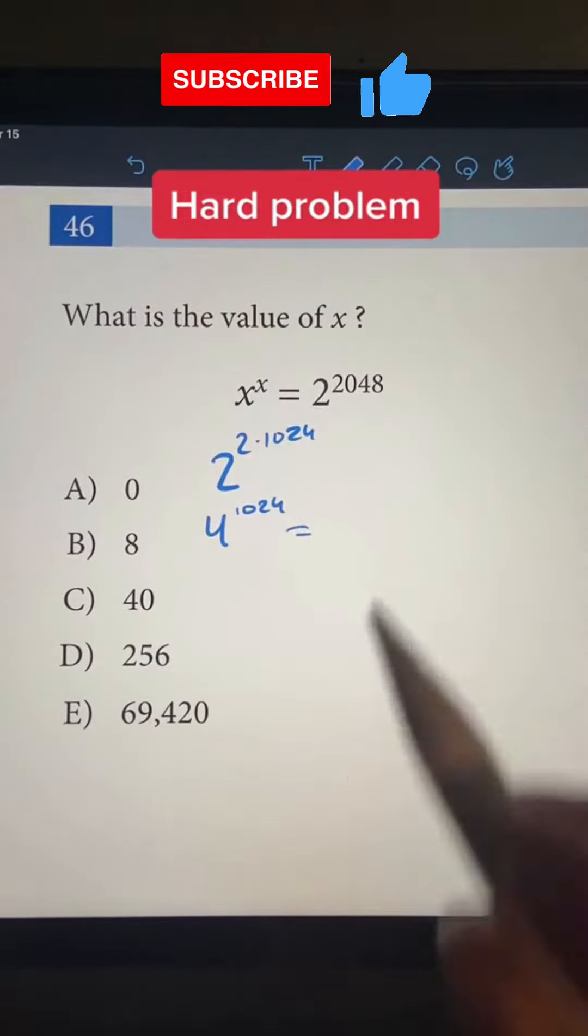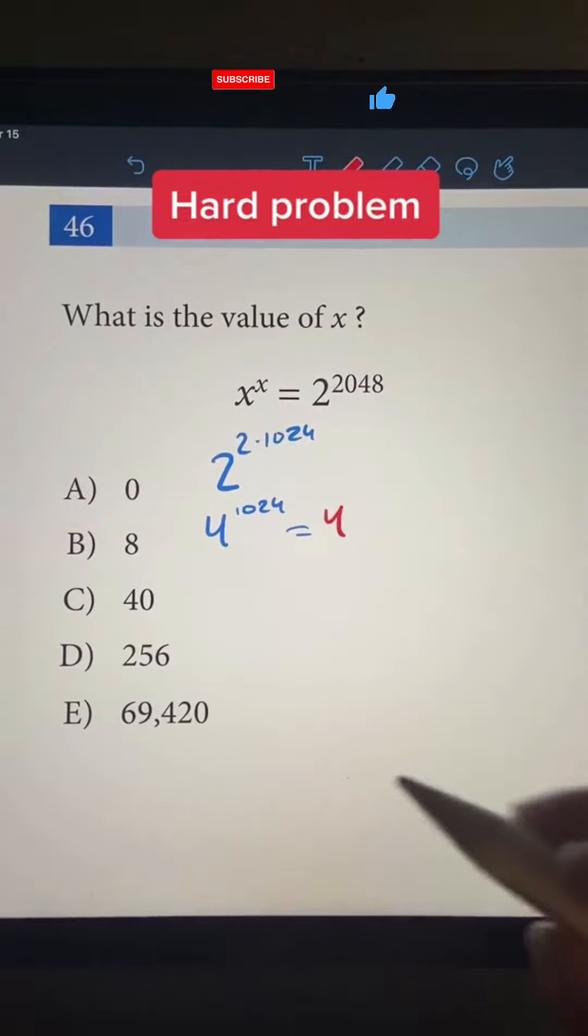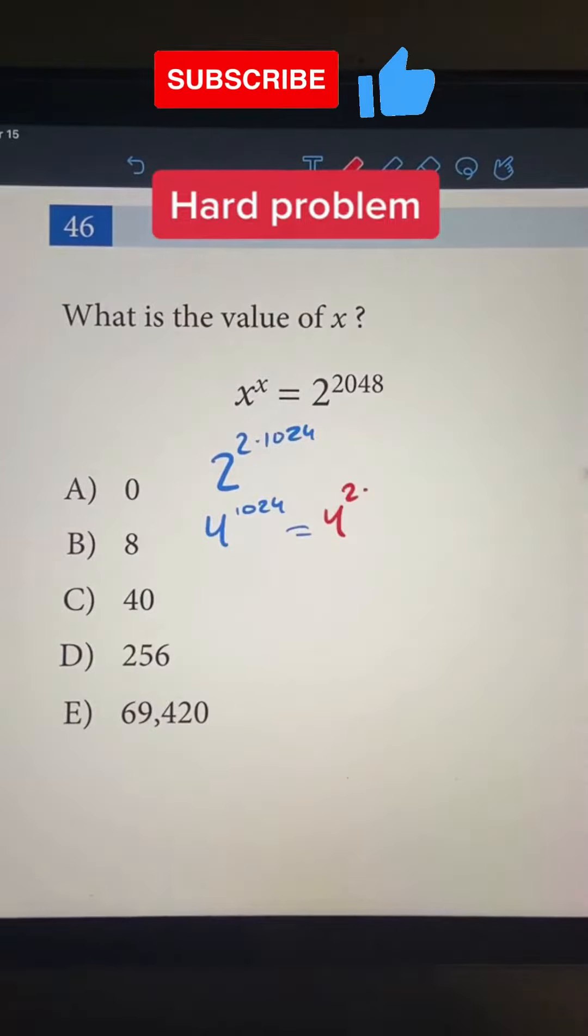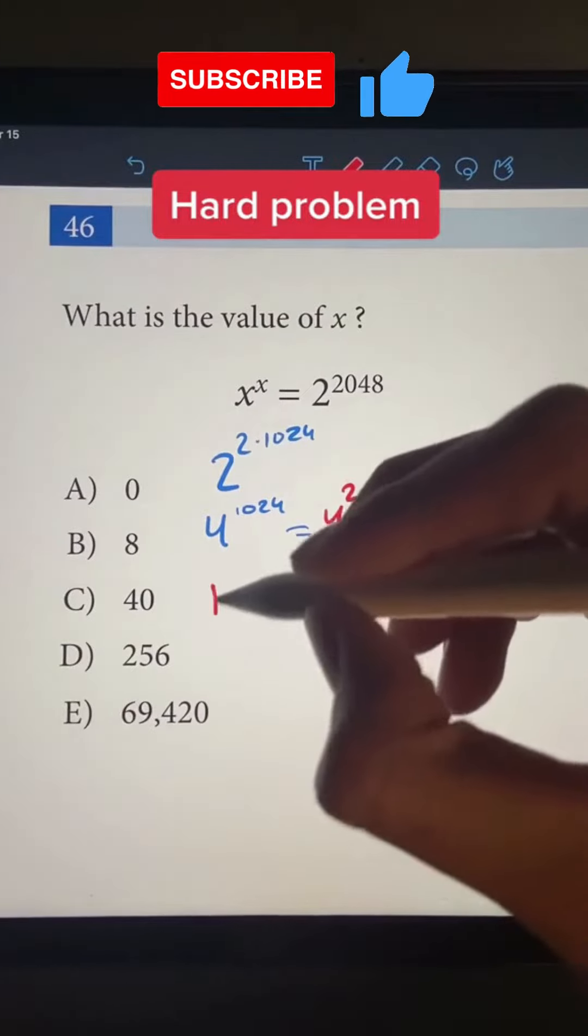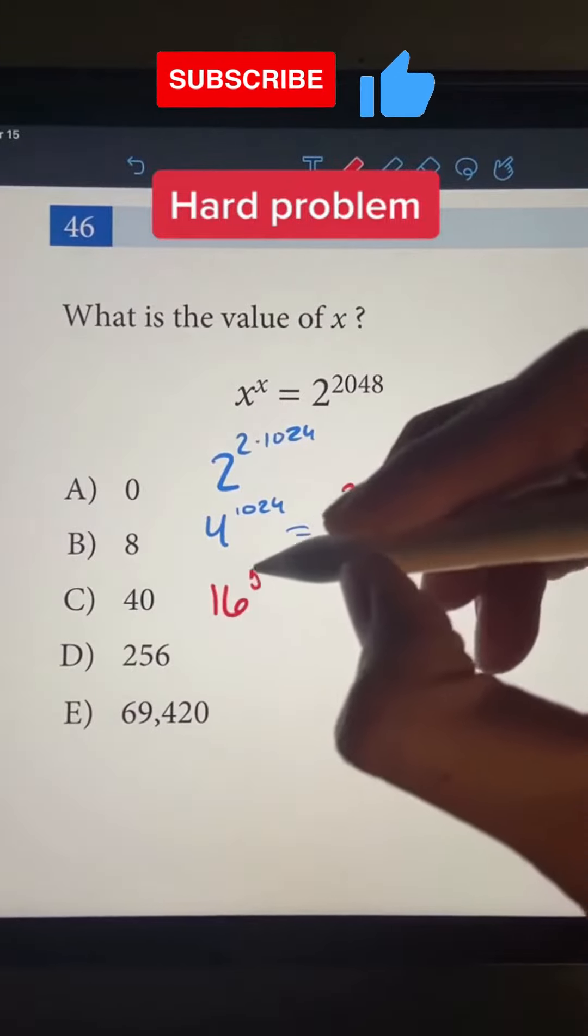Now I'm going to keep repeating this process. I'm going to rewrite it as 4 to the power of 2 times 512. Our new base is just 4 squared, so we have 16 to the power of 512.